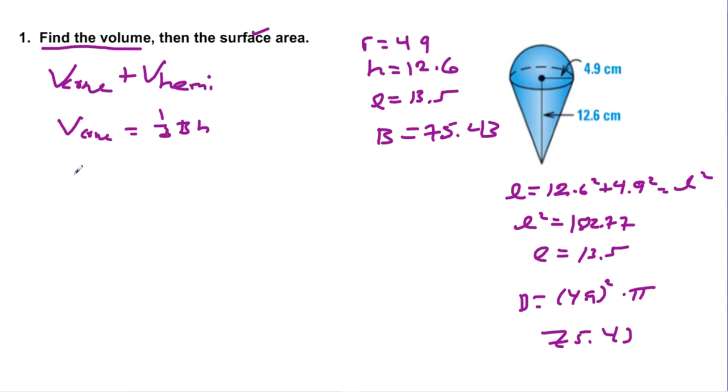So volume of the cone is equal to 1 third base height. Volume of the hemi is just 2 thirds pi r cubed. So in goes these ingredients right into your formula. So here we go. 1 third. So we have 1 third. Area of the base is 75.43. And my height is 12.6. Absolutely calculator on this. And then we're going to add in the volume of my hemisphere. Here, 2 thirds pi and 4.9 cubed.